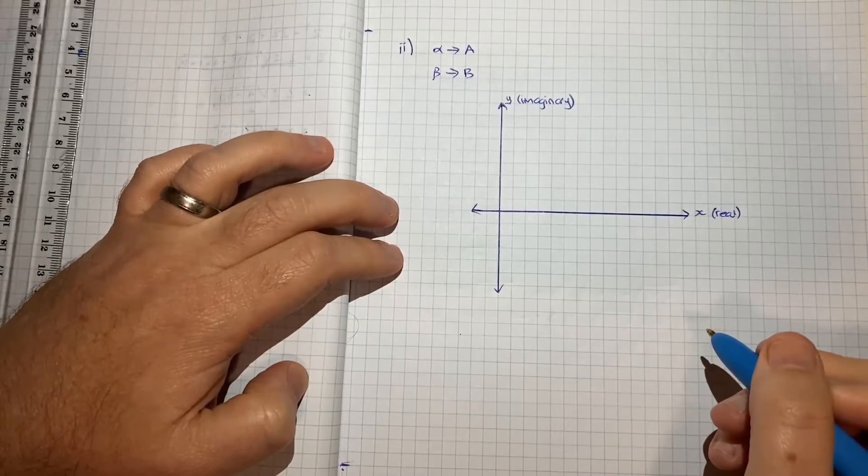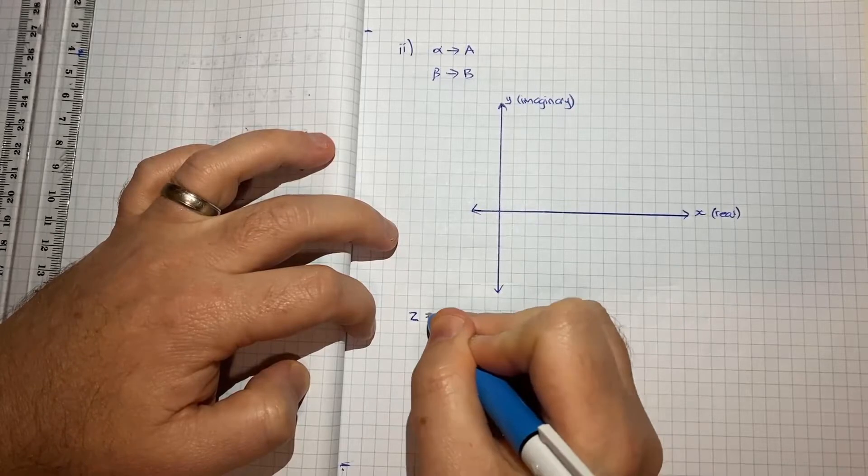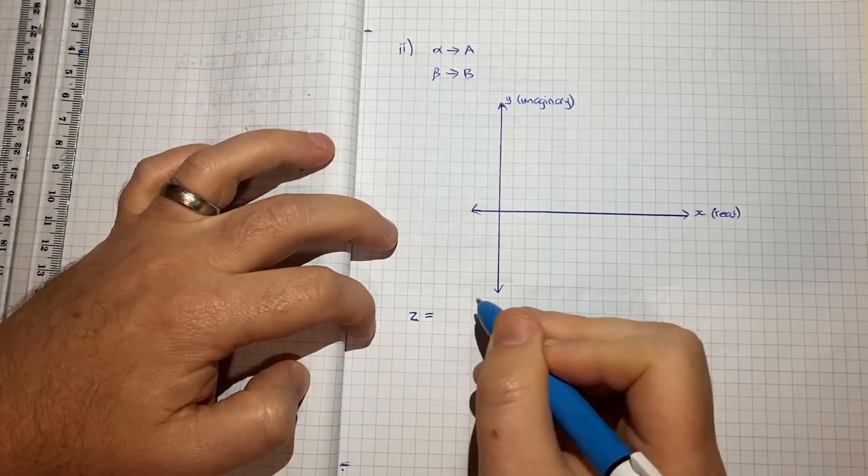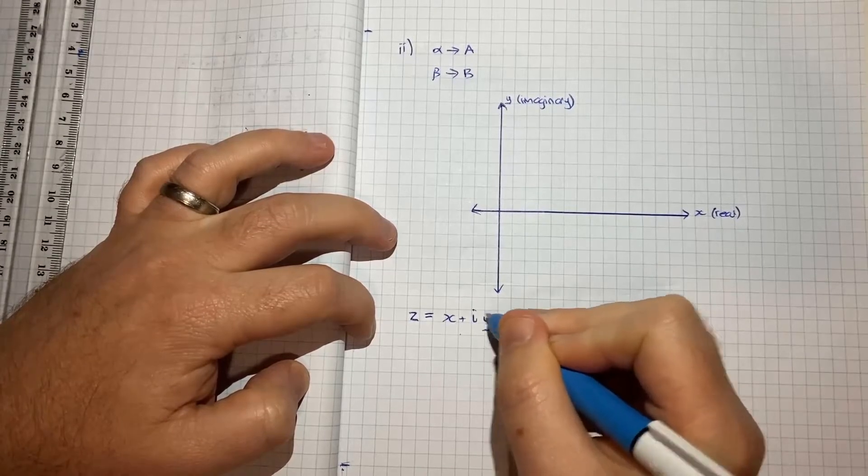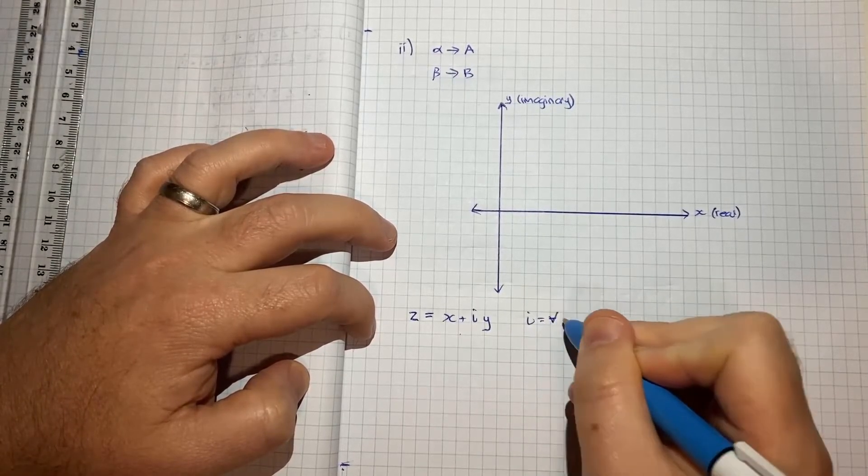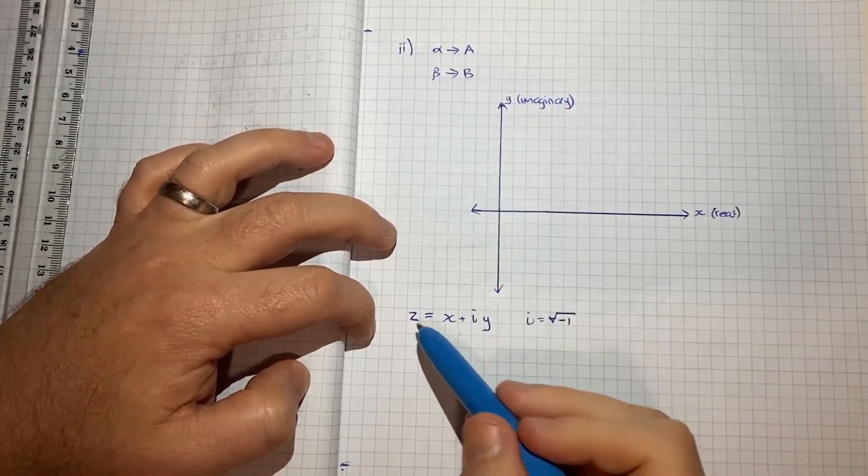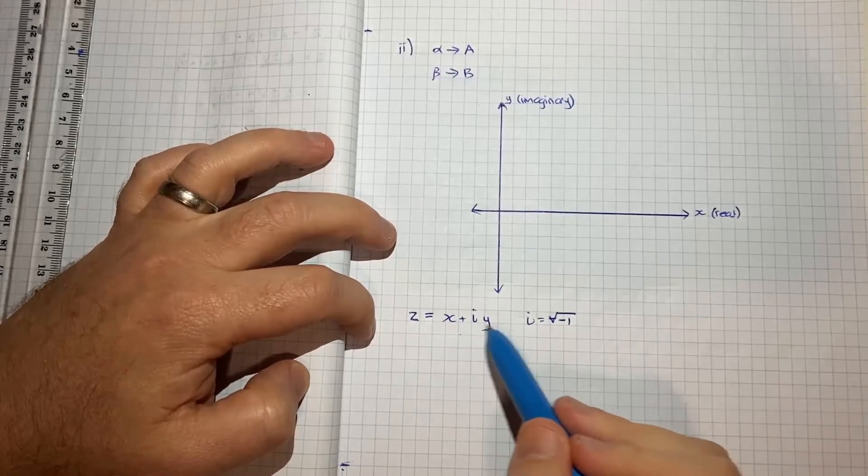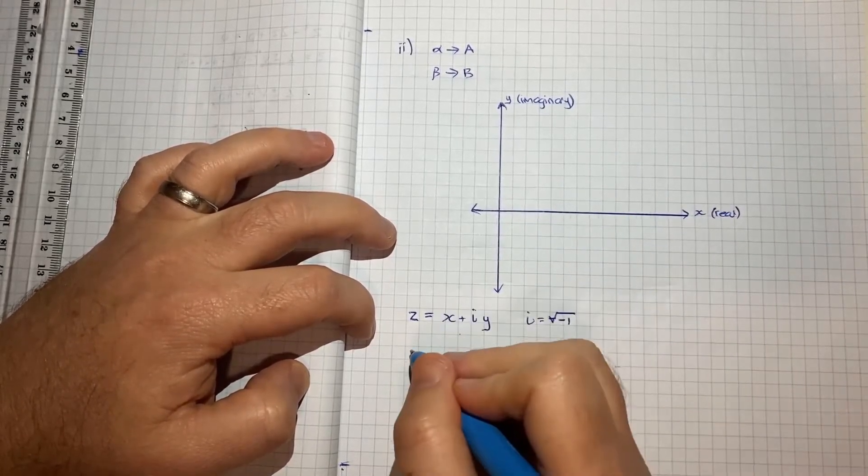So we'll have our, I'll still call it X and Y, but what we're really thinking of is a real axis and an imaginary axis. And what we do is we use the generic form of complex numbers of Z, I'll just use Z here, is equal to X plus IY. And in this case, I is equal to the square root of negative 1. So what we want to do is get our alpha and beta in this format X plus IY, and then we can simply do our plot.